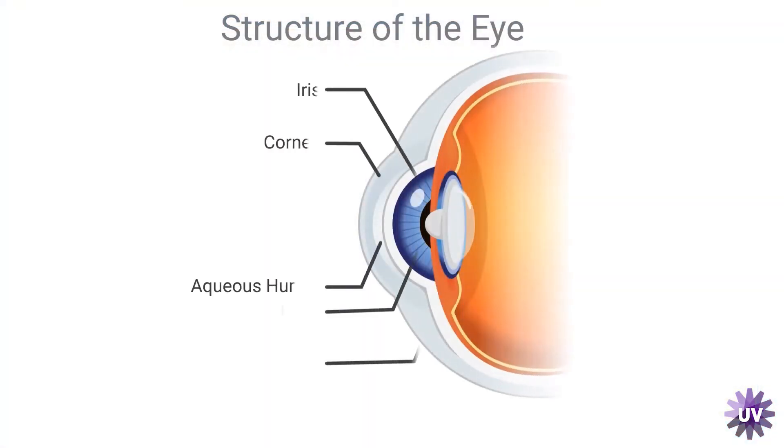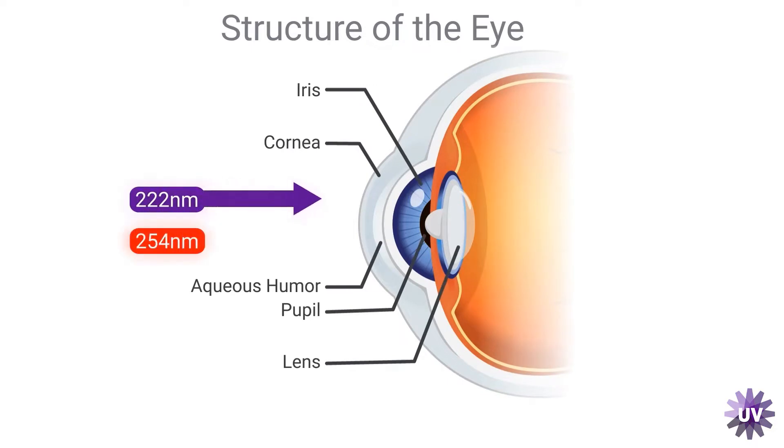Far UVC is considered to be wavelengths under 230 nanometers. The reason we differentiate far UVC is that, in addition to its effectiveness against pathogens, it has a very different interaction with human cells. Specifically, 222 nanometers is absorbed by proteins in our cells — both the dead skin cell layer on the skin and the tear layer that covers and protects our cornea from exposure.